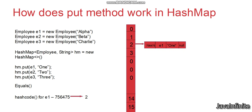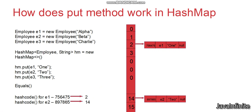Next, it takes the key e2, calculates the hash code for e2, and based on the indexing calculation it places it in bucket 14. The hash code is stored in bucket 14, followed by the key e2, the value 2, and the next node which is null. For the next key e3, the hash code is calculated as 756909, and the indexing operation assigns it to bucket 2 as well — but we already have a value in bucket 2.